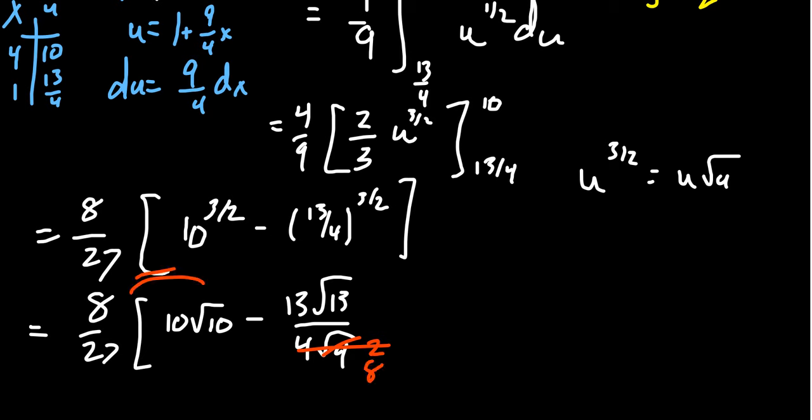If we distribute the 8 through to kind of clean up the fractions a little bit, you're going to have a 1 over 27th out in front. And then you're going to end up with 8 times 10, which is 80, 80 root 10, minus 13 root 13, like so.